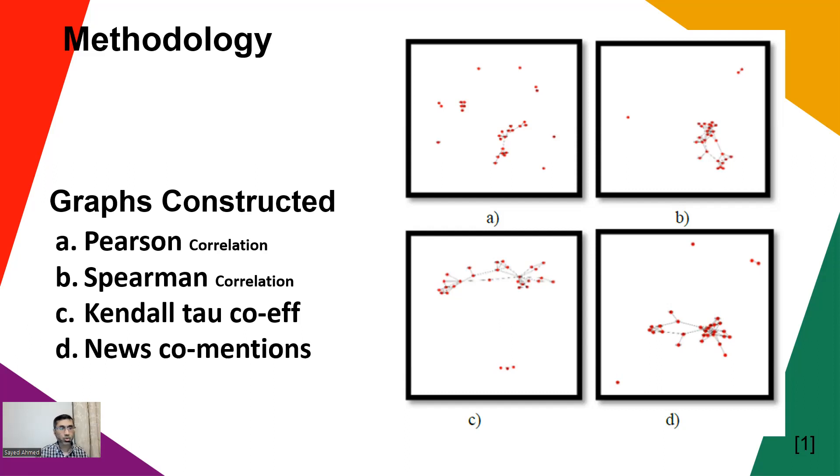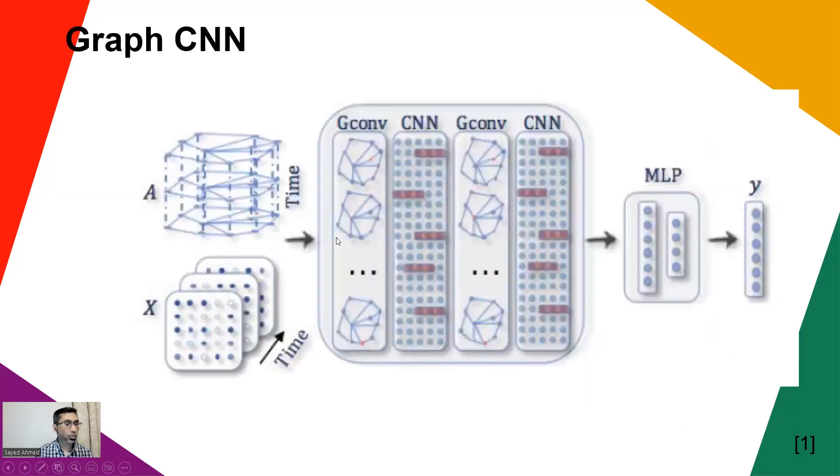The fourth graph is the news co-mention. If one article mentions two stocks or three stocks, we create edges between those. We put a weight of one. If another article mentions two of them, we get another edge, meaning we just increase the weight. That's how the causation graph is being formed.